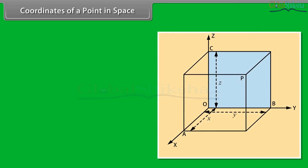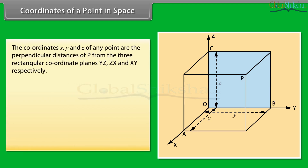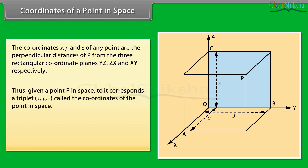If we complete a rectangular parallelepiped through P with its three edges OA, OB and OC meeting each other at O and OP as its main diagonal, then the lengths OA, OB, OC — i.e. x, y, z — are called the coordinates of the point P. The coordinates x, y and z of any point are the perpendicular distances of P from the three rectangular coordinate planes YZ, ZX and XY respectively. Thus, given a point P in space, there corresponds a triplet (x, y, z) called the coordinates of the point in space.